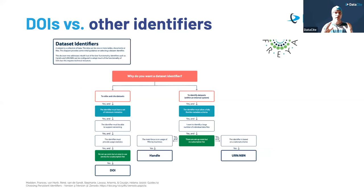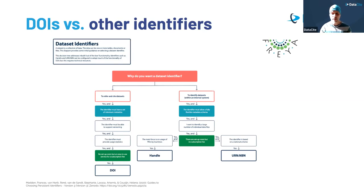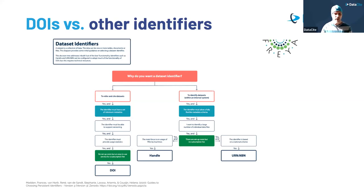Here is a short decision tree diagram showing which PID is appropriate for which purpose. Without going into too much detail, if you want to refer to and find datasets, you should go for DOIs. But if you want to identify datasets within an internal system, then a handle or URN/NBN is the way to go. You can refer to the source at the bottom of the slide for more information.